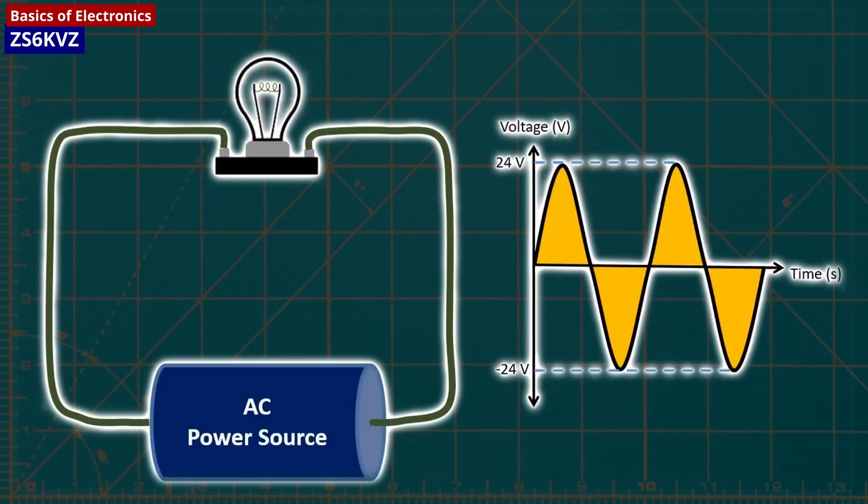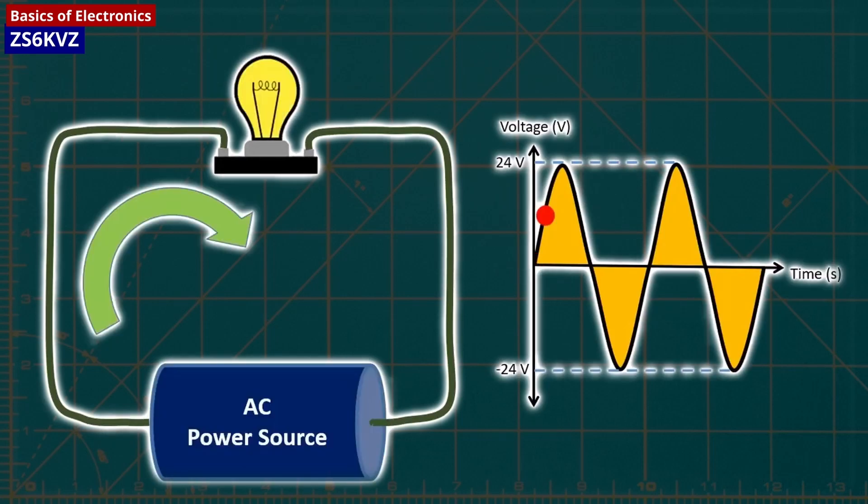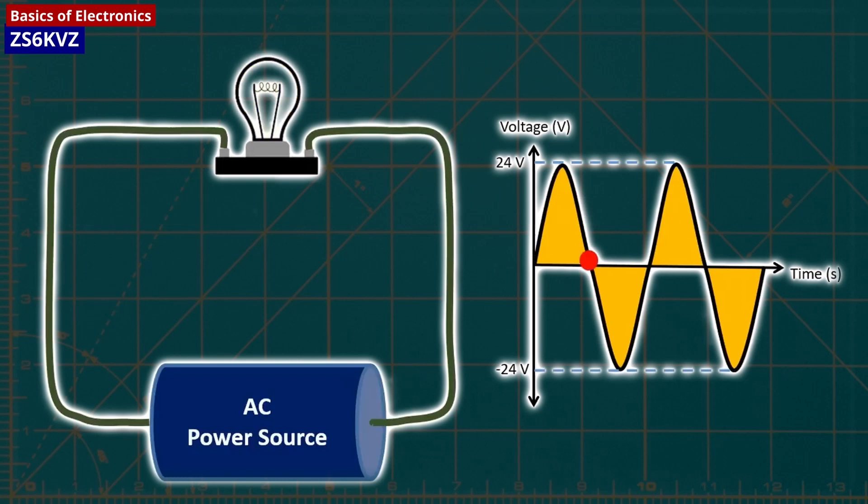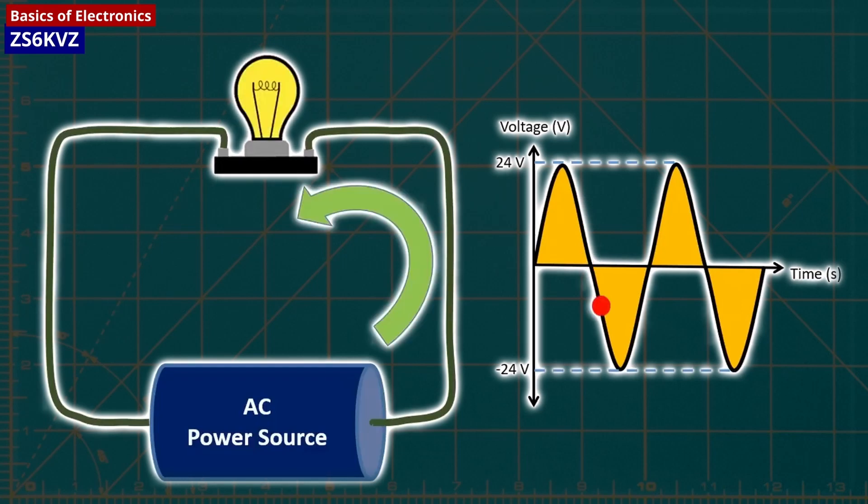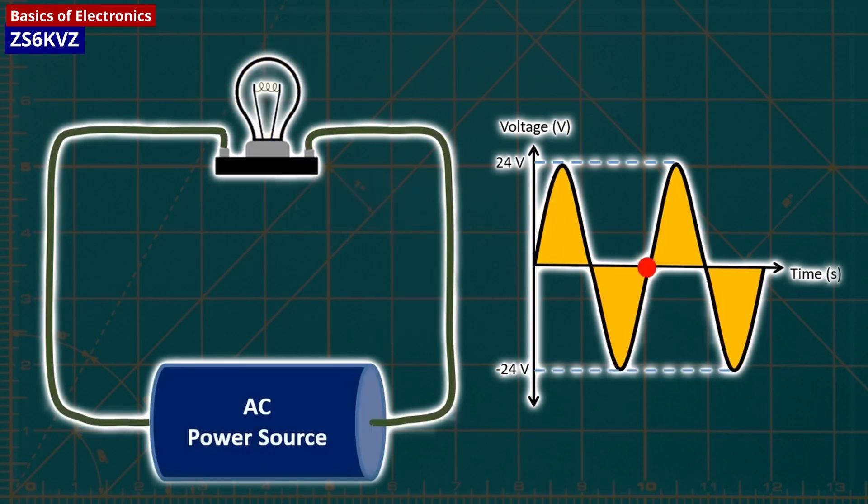With AC, the direction of electricity flow throughout the circuit is constantly reversing. The rate of reversal is measured in hertz, which is the number of reversals per second. For instance, when they say that the U.S. power supply is 60 hertz, it means that it is reversing 120 times per second.